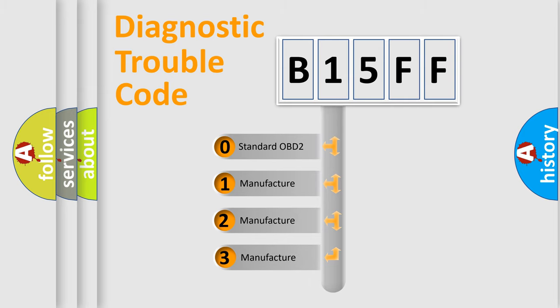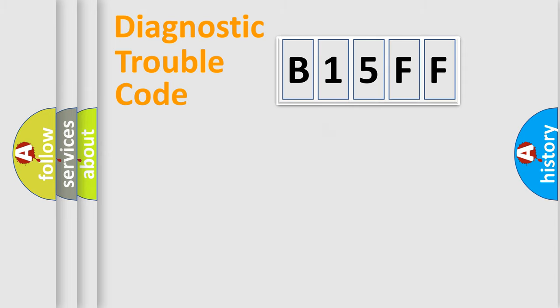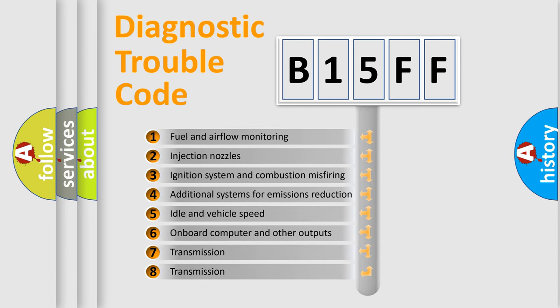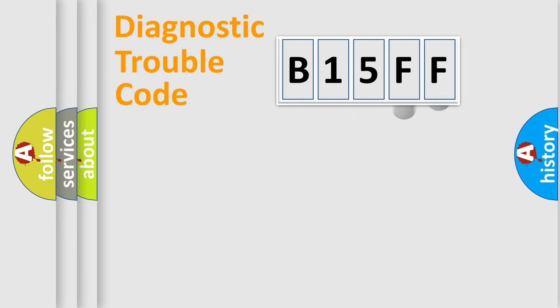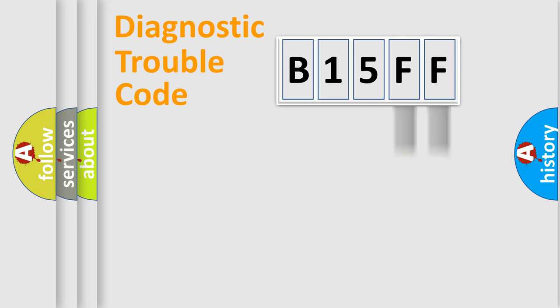If the second character is expressed as zero, it is a standardized error. In the case of numbers 1, 2, or 3, it is a manufacturer-specific expression of a car-specific error. The third character specifies a subset of errors. The distribution shown is valid only for the standardized DTC code, and only the last two characters define the specific fault of the group.